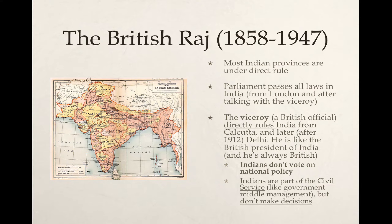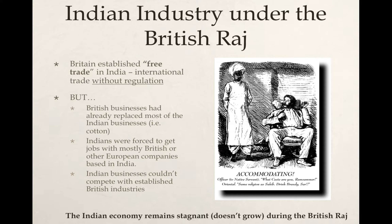Indians could become part of something known as the civil service, which is like the government bureaucracy or management system, but they were not able to vote on anything. Moreover, Indian industry under the British Raj really suffered because the British promoted free trade, in which any business could operate in India regardless of where they're from, and could import and export out of India with very low taxes. This meant that countries that had industrialized earlier had an advantage because they had more financial backing, more industrial resources, and more experience. These companies were not at the same starting point as Indian companies, and so they had an advantage within the Indian economy.